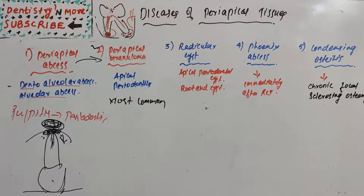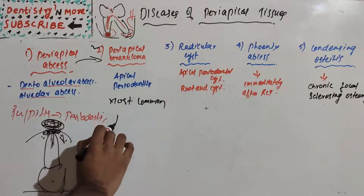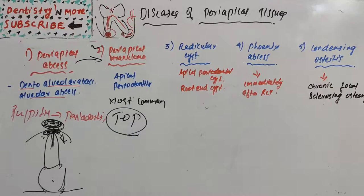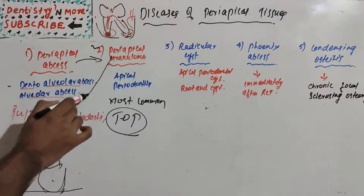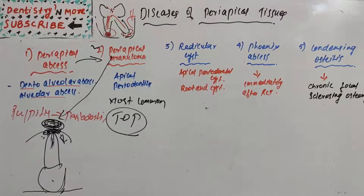Clinical features: it is the first evidence that spread has gone beyond the confines of the tooth pulp. There is sensitivity of the involved tooth to percussion, mild pain when biting or chewing solid food, and in some cases the tooth feels elongated in its socket. This sensitivity is due to edema, inflammation of the periodontal ligament, and hyperemia.